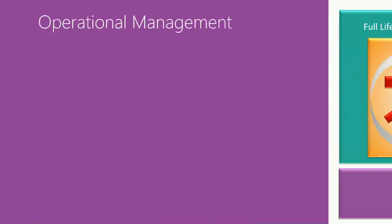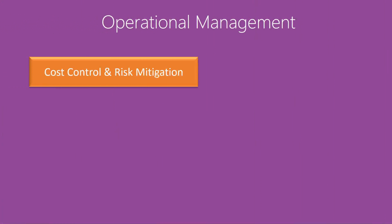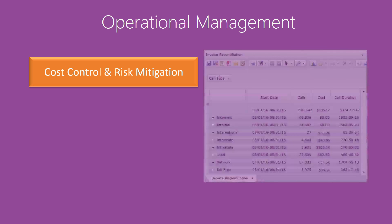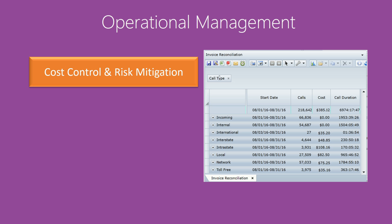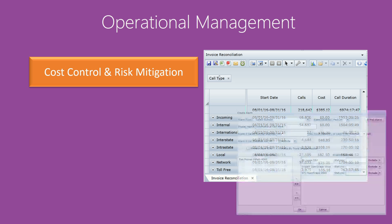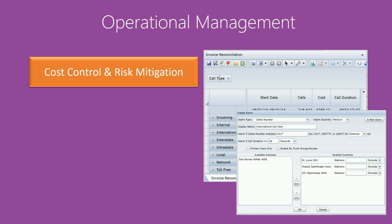Now let's dig into operational management. Cost control and risk mitigation covers a broad spectrum of topics. When your service provider bill arrives, can you easily compare and validate call counts, usage, and cost? Do you see fraud and abuse in time to stop it without financial impacts? Can you provide your business managers insight into their team's network usage and cost?